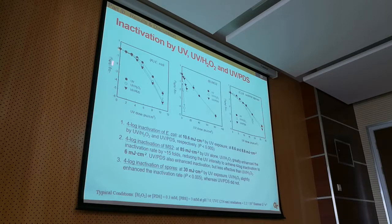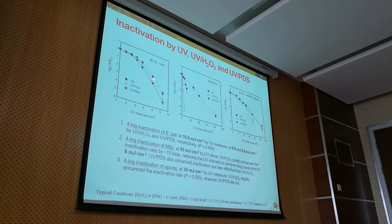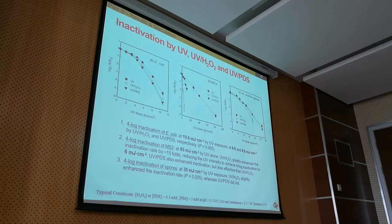Disinfection is normally presented by the survival rate — the log of the end population divided by the initial population. One log reduction means the population decreased tenfold; four log reduction is decreased by ten-thousandfold. The typical disinfection goal is four log reduction. For the three organisms and the UV-only versus UV-AOP options: for E. coli, AOP slightly improved disinfection compared to UV only. For virus, UV-H2O2 significantly improved inactivation, and UV-Persulfate also improved inactivation. For spores, only H2O2 slightly improved disinfection. So AOP is good for certain cases — it is particularly very good for MS2 virus inactivation.